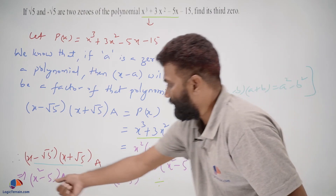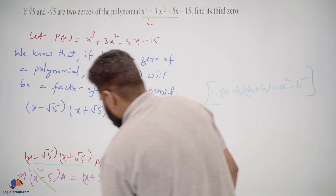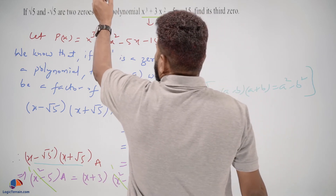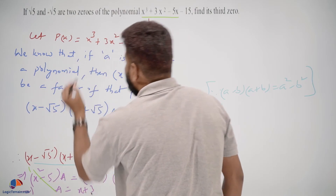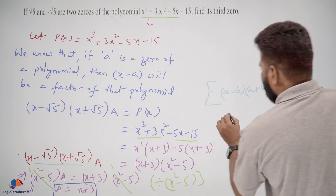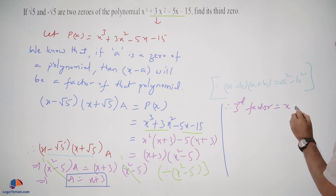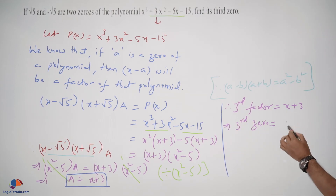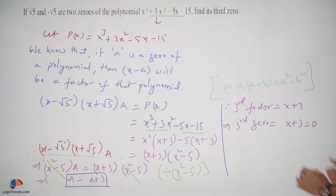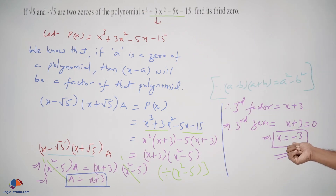We can divide both sides by x squared minus 5, so a equals x plus 3. Therefore the third factor is x plus 3, and setting x plus 3 equals 0 gives x equals minus 3. The third zero of the given polynomial is minus 3.